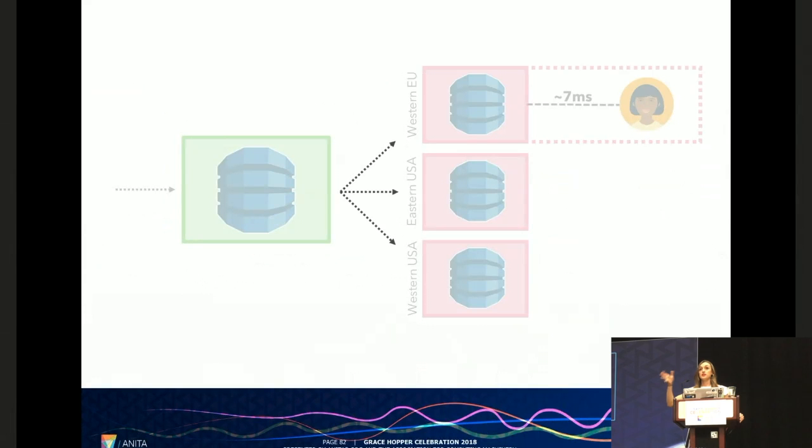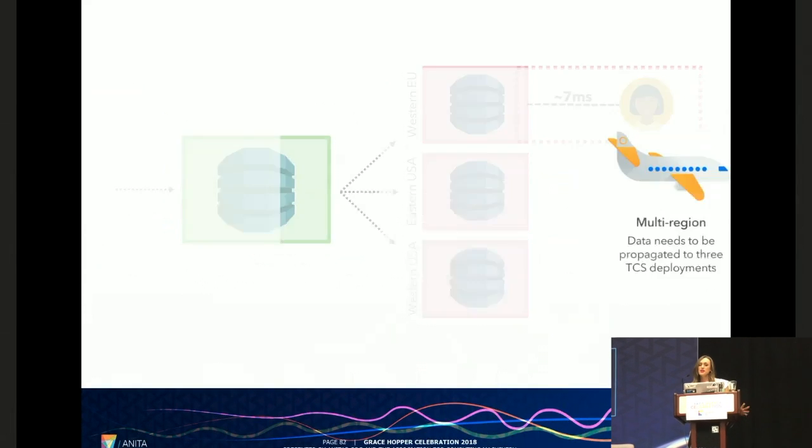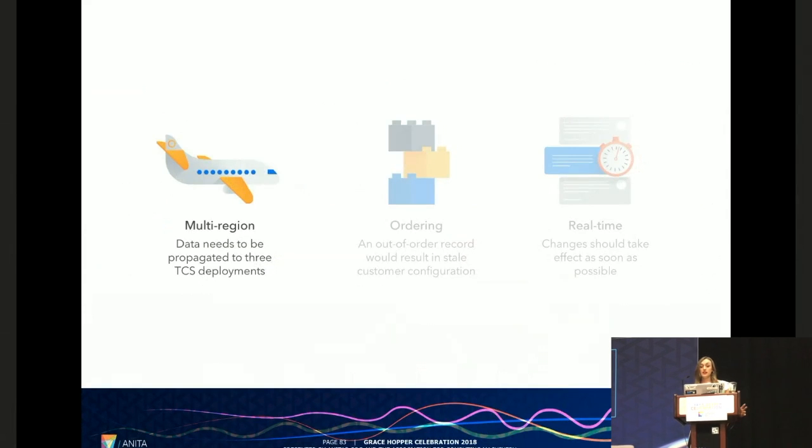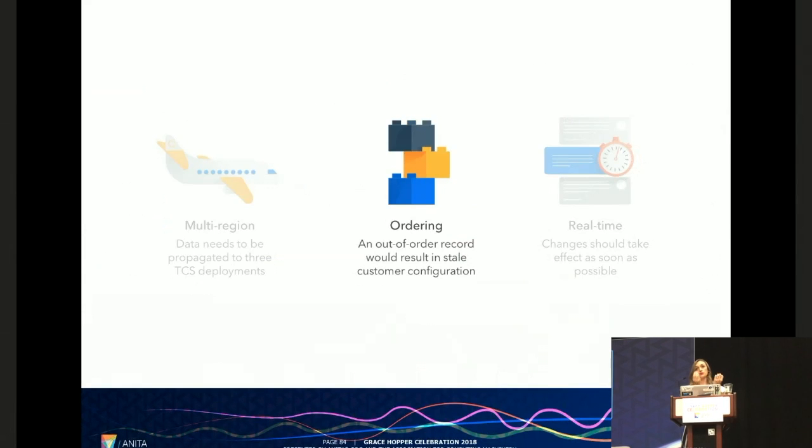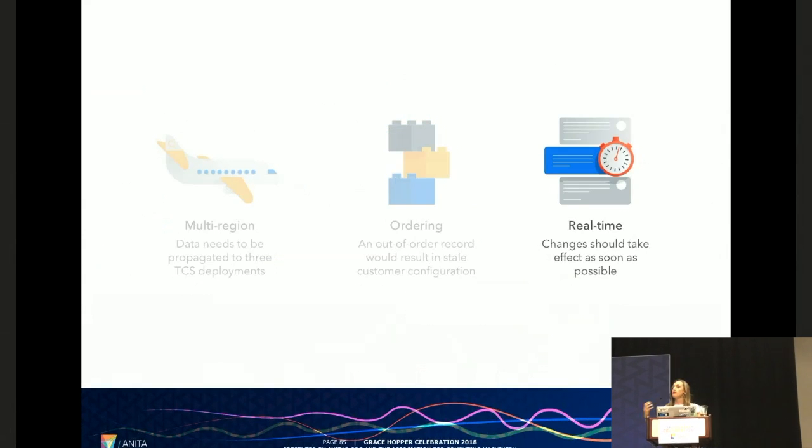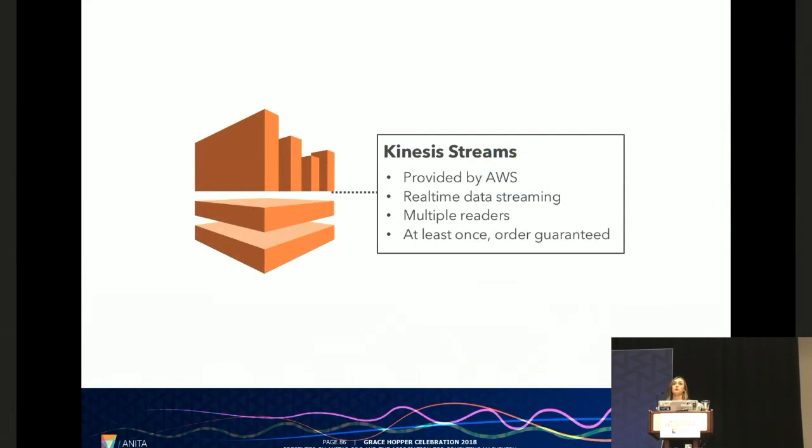However, this did mean that we needed to find a solution that could get our data from our single source of truth out to our TCS stacks. It needed to be something that could propagate data to multiple different regions. It needed to guarantee ordering. Because if you think about us receiving a request to deactivate a product, and then a request to activate a product. Let's say we were to get that order incorrect. The impact there is that we would have customers paying for products and completely unable to access them. And that was just not going to fly. Finally, it had to be real time. Because I mentioned before, we're making these trade-offs with eventual consistency. But at the end of the day, we're talking in the scope of milliseconds. For the vast majority of the time, we don't want people to even realize there's two systems going on in the background. So for us, this meant that Kinesis streams provided by AWS was a really good fit. And because it not only allowed for multiple different readers from all over the world, but it also guaranteed that your records would be delivered in order at least once. And it was going to do it fast.